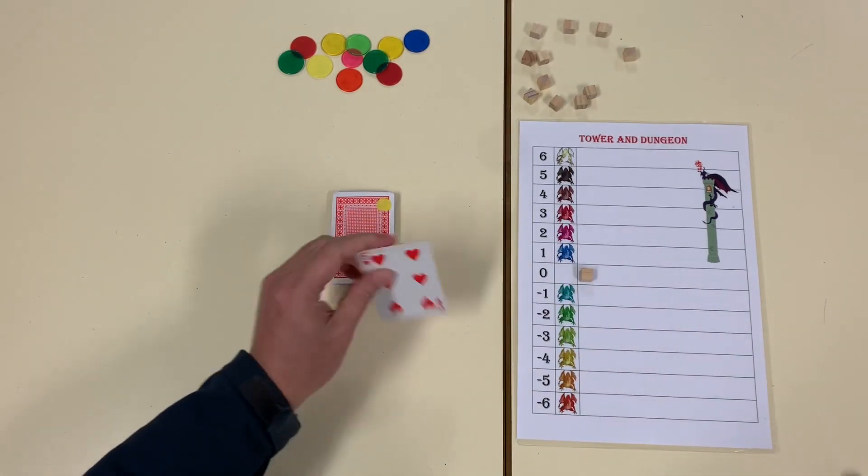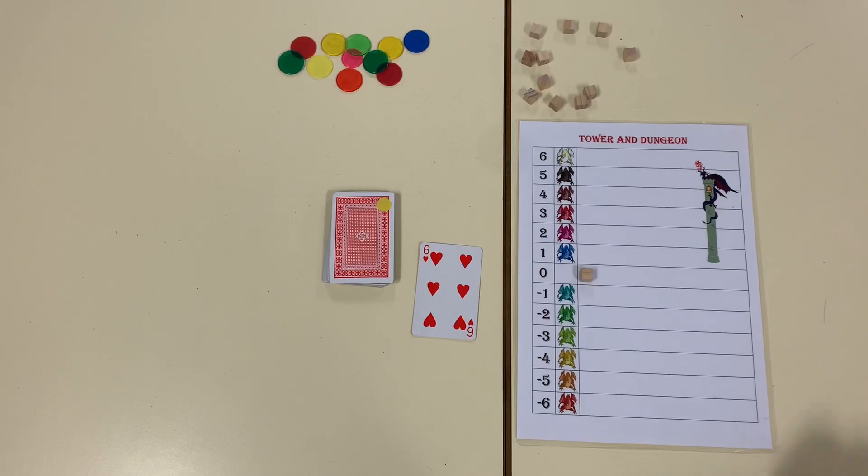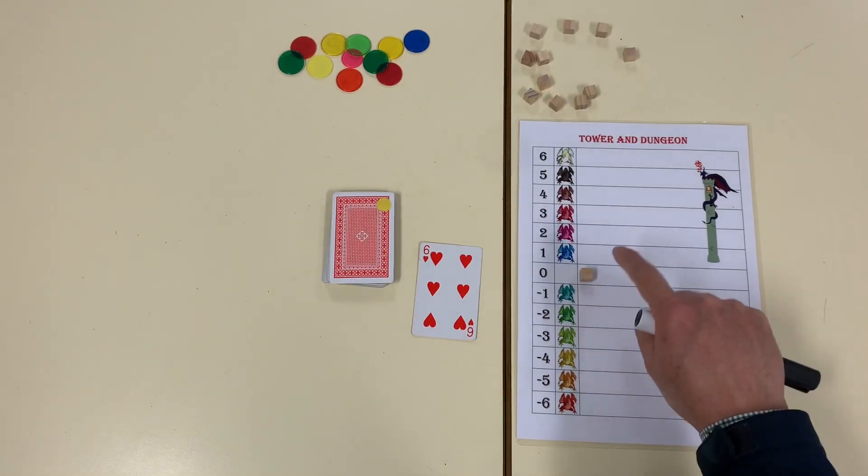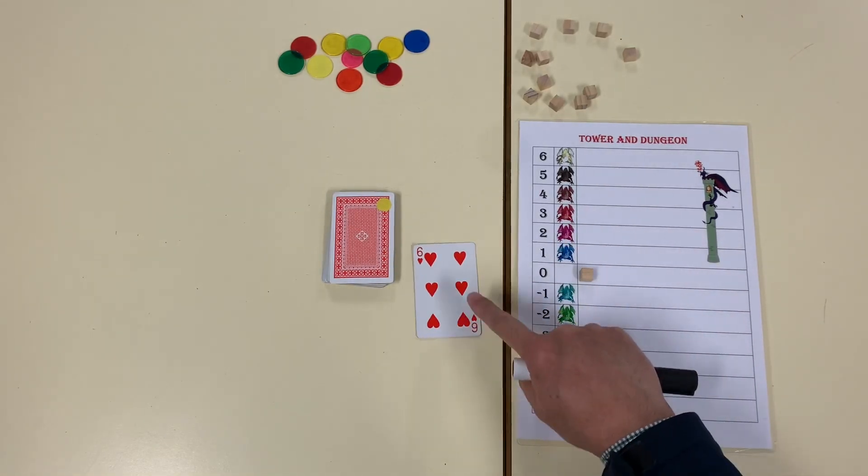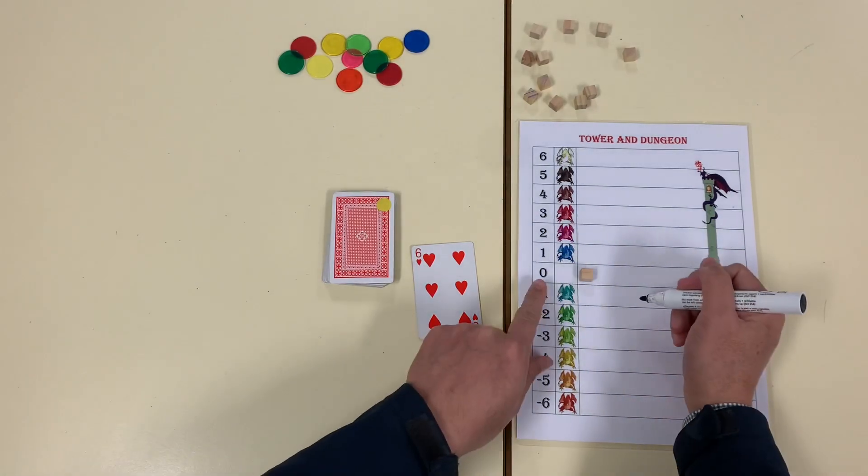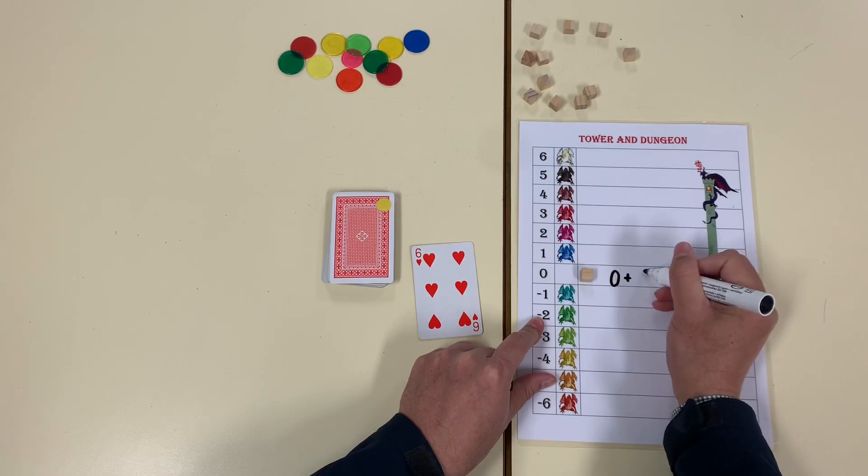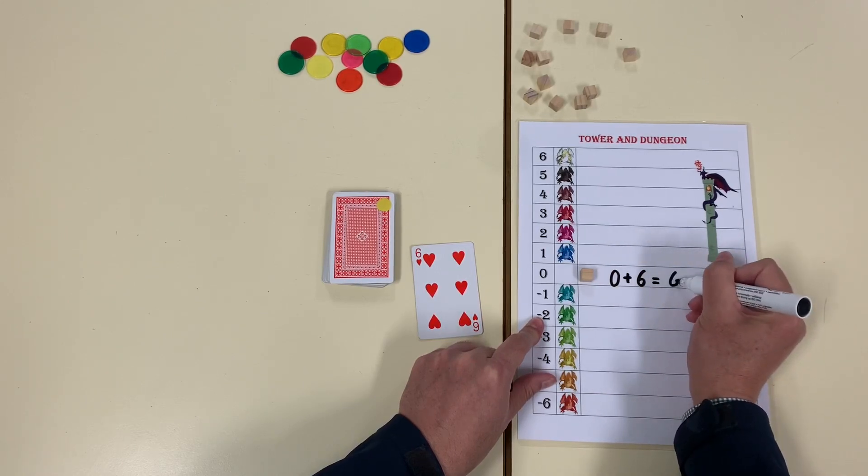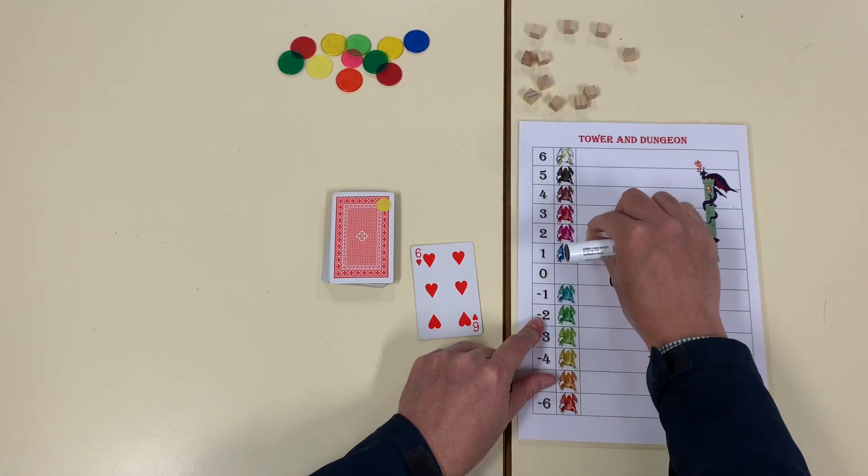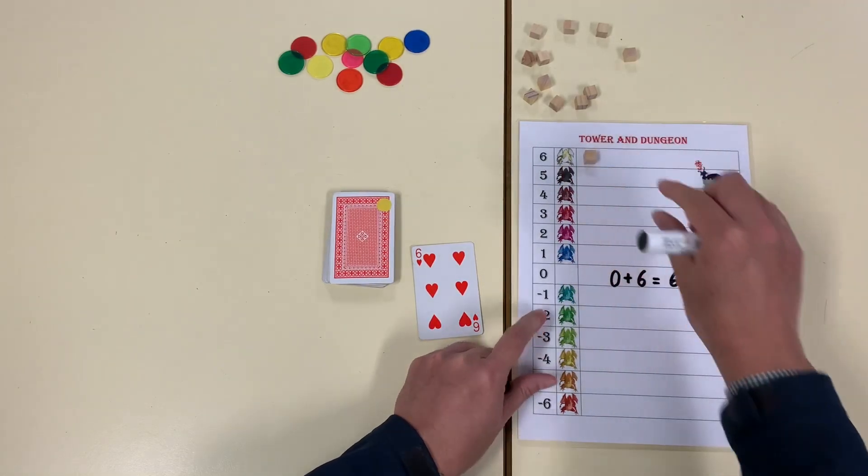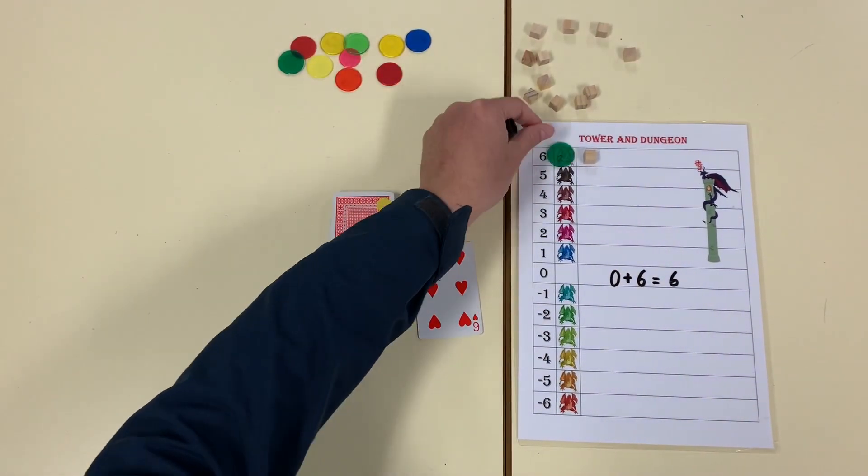Now I pick a card and place it. I have to decide if I want to go up or down using six. If I'm going up from this floor, I'm going to go up. Means this plus, so the answer is six. So I go one, two, three, four, five, six. I go on the sixth floor. I can slay that white dragon.